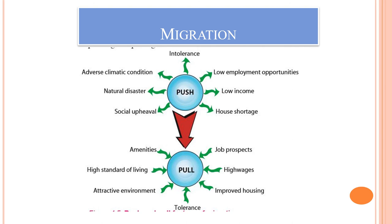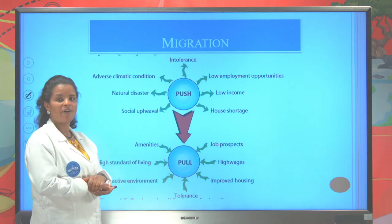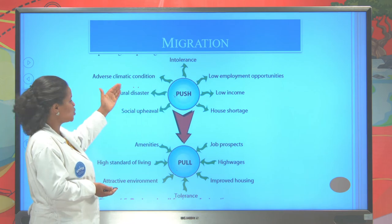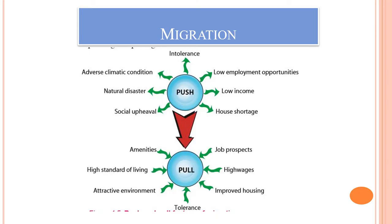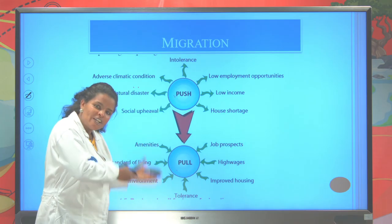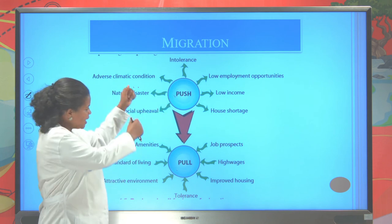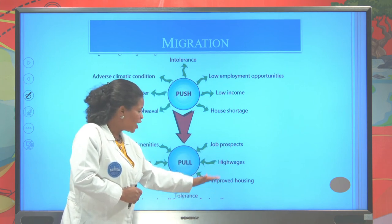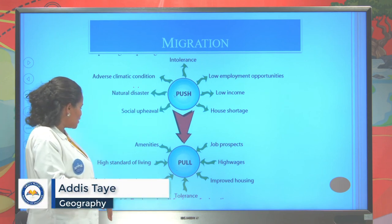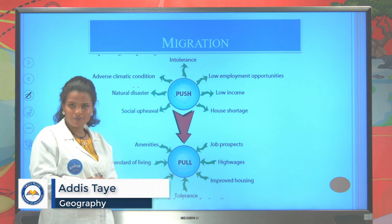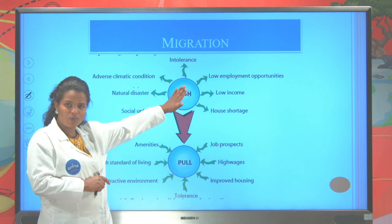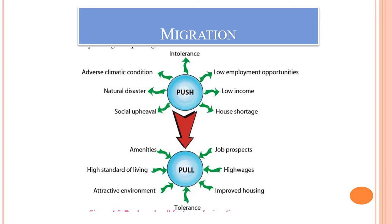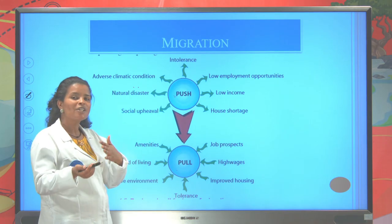People migrate from one place to another because of pushing and pulling factors. The pushing factors include diverse climatic conditions, natural disasters, low employment opportunity, and low income. People leave their original place because of these pushing factors and are attracted by pulling factors. The pulling factors are job prospects, high wages, improved housing, a high standard of living, and an attractive environment. In general, migration is the movement of people from one place to another because of pushing and pulling factors.